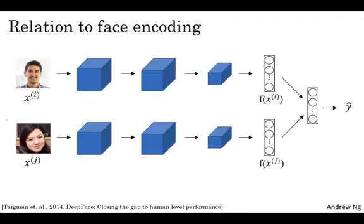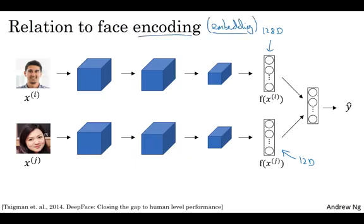Finally, word embeddings has an interesting relationship to the face encoding set of ideas that you learned about in the previous course if you took the convolutional neural networks course. So you will remember that for face recognition, we trained this Siamese network architecture that would learn say a 128 dimensional representation for different faces and then you could compare these encodings in order to figure out if these two pictures are of the same face. The words encoding and embedding mean fairly similar things.